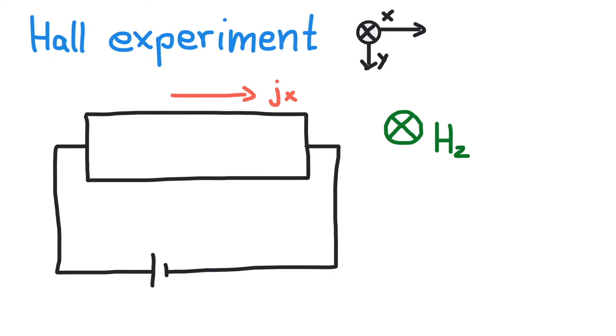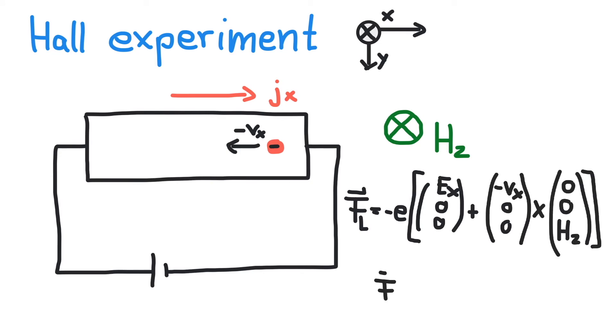This means charge minus E moves with velocity minus Vx. The Lorentz force and maybe a little help of the right-hand rule shows that electrons are now deflected to the negative y-direction.